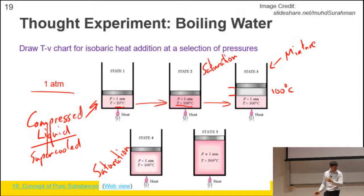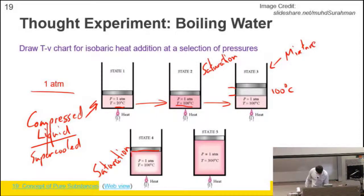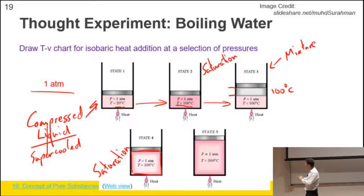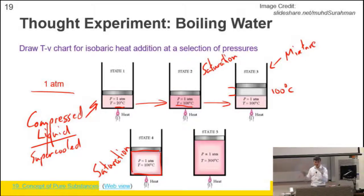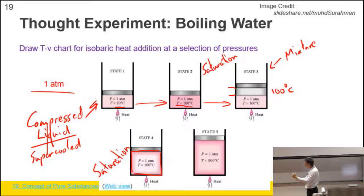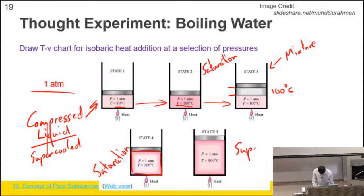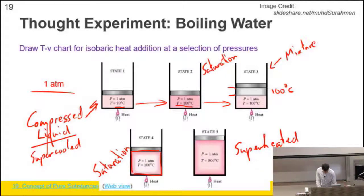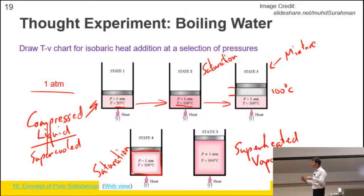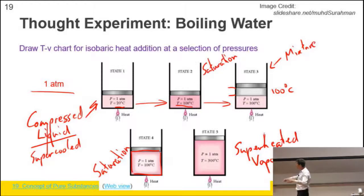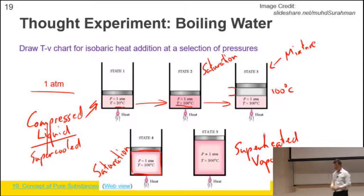Then we're going to keep adding heat. And like my kettle on the floor, the water is still at 100 degrees C. But we start to boil off some steam, and this steam is also at 100 degrees C. So you've got two phase. So this would be called the point of saturation. This would be called a mixture. This would be called a compressed liquid or a supercooled liquid.